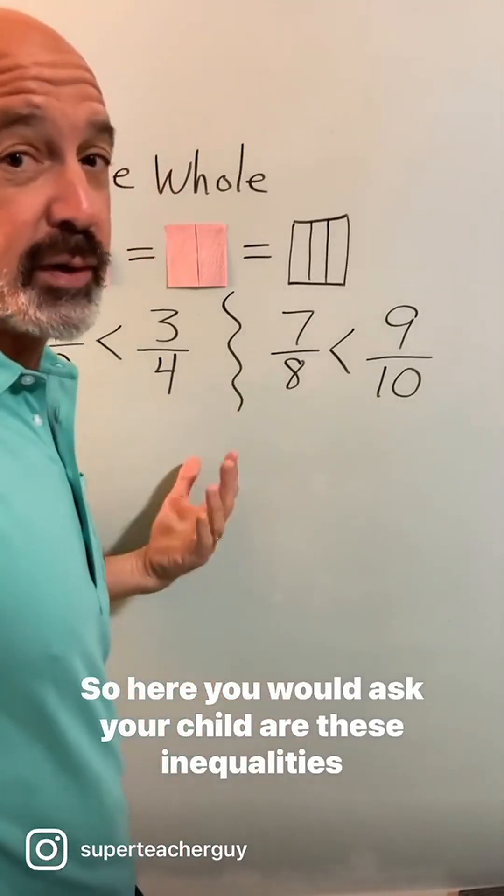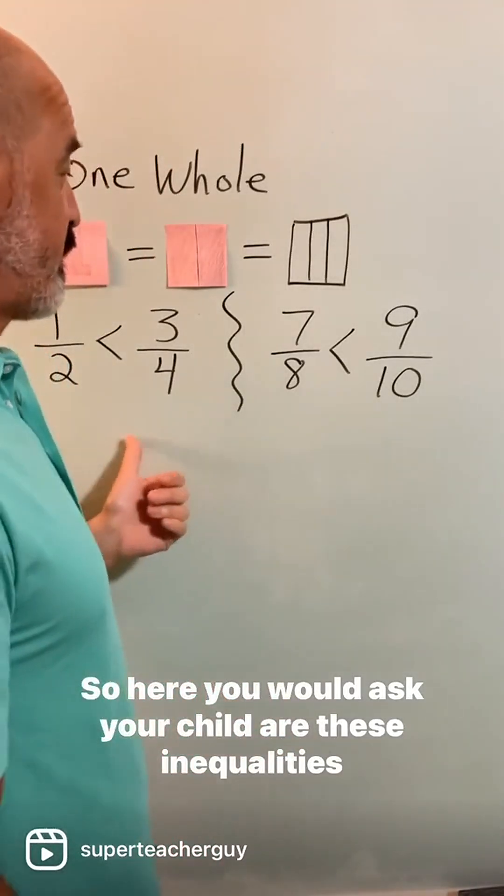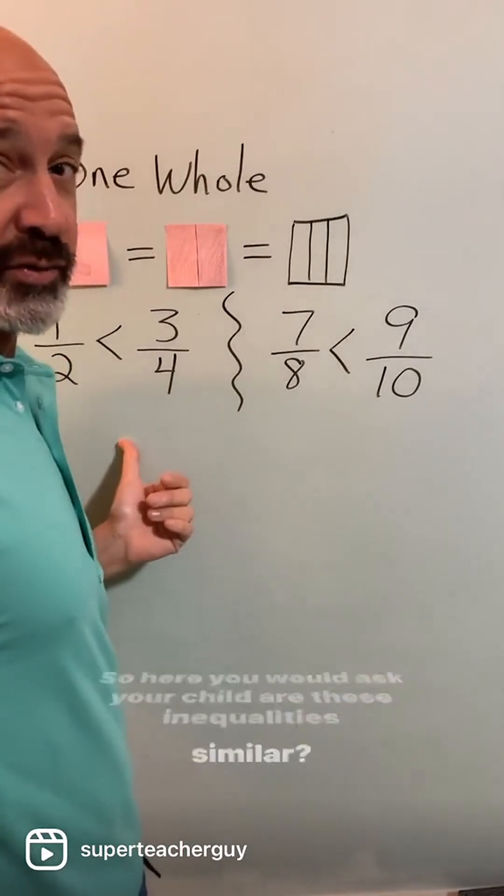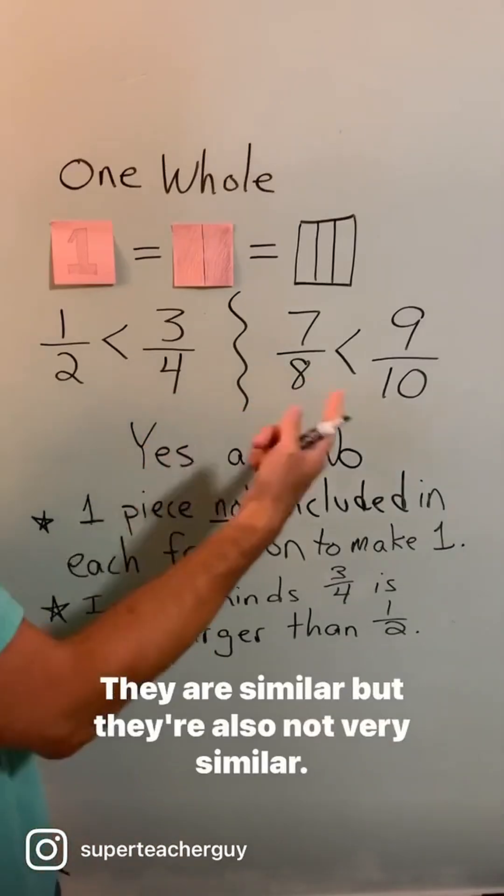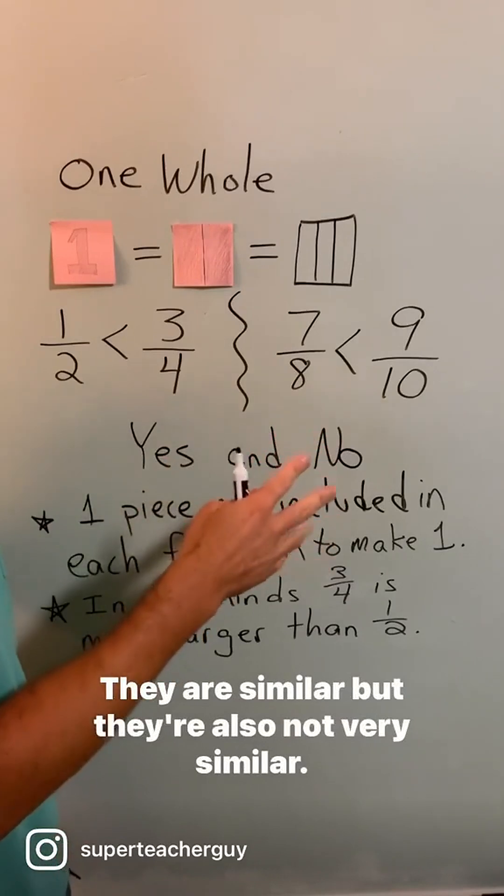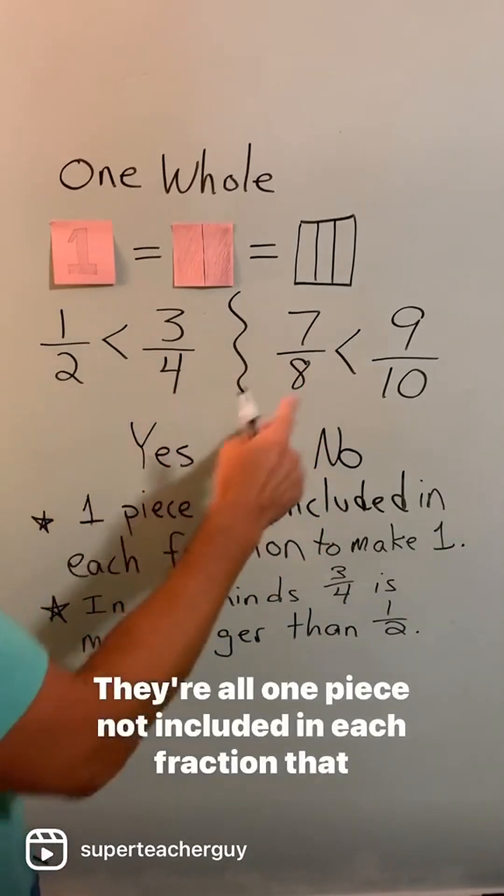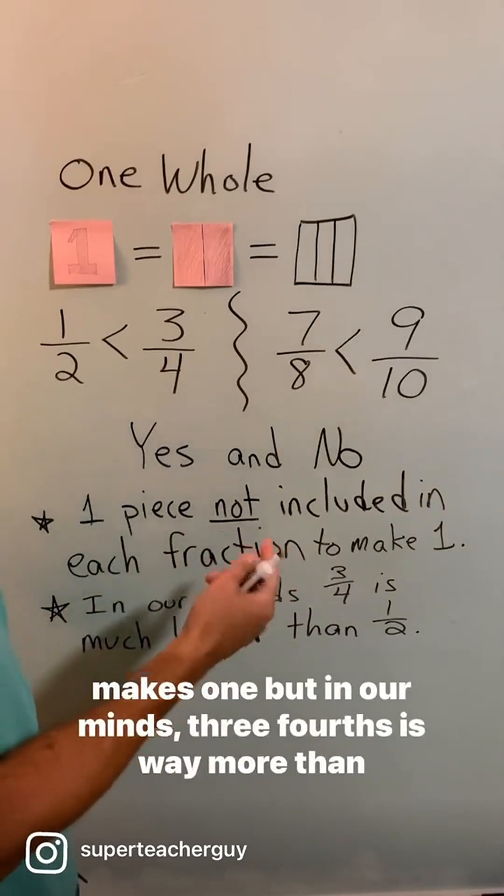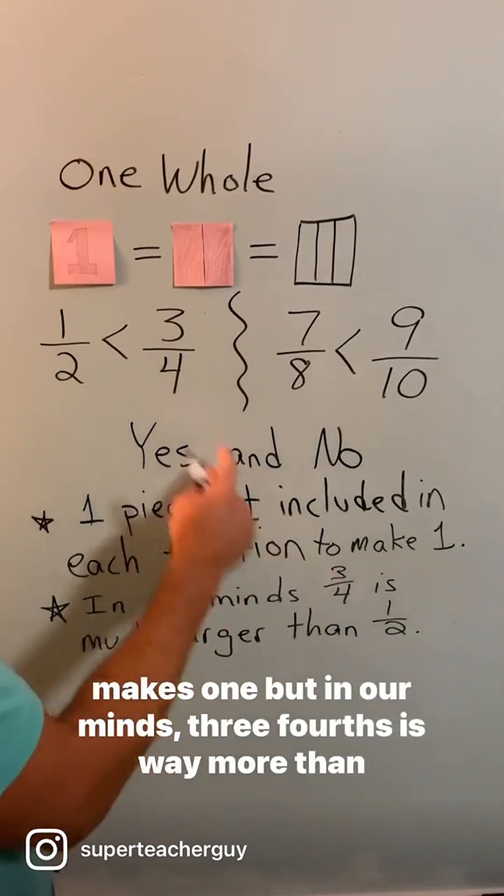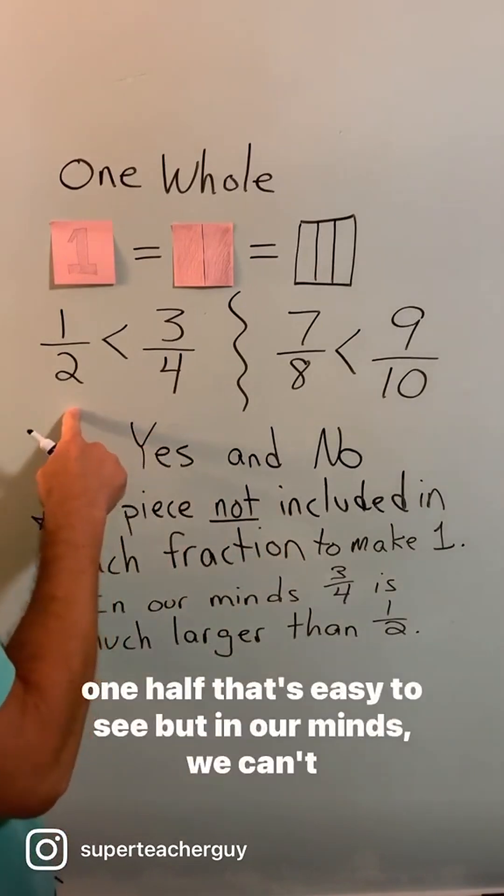So here you would ask your child are these inequalities similar? The answer is yes and no. They are similar but they're also not very similar. They're all one piece not included in each fraction that makes one. But in our minds three-fourths is way more than one-half. That's easy to see.